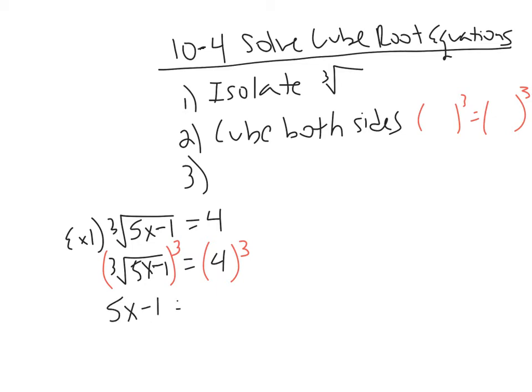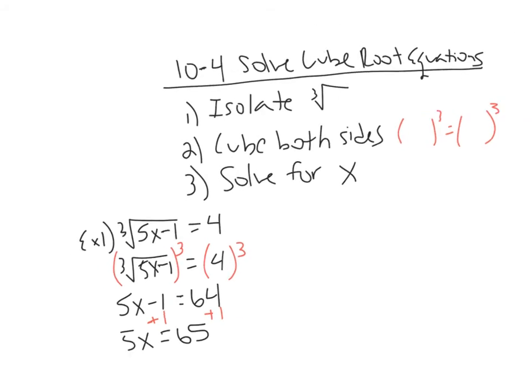Well, the cube is just going to undo the cube root, so I'm just left with 5x minus 1. 4 cubed, 4 times 4 times 4, is 64. And now we just have a linear equation, so we just need to solve for x. So if we solve for x, we can add 1 to both sides. 5x equals 65.